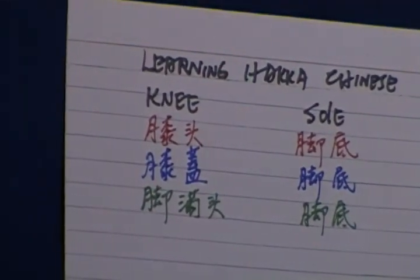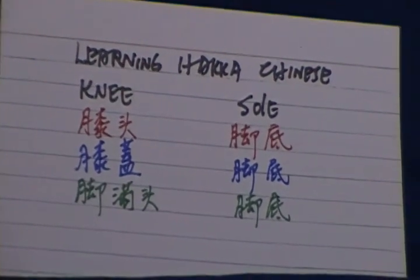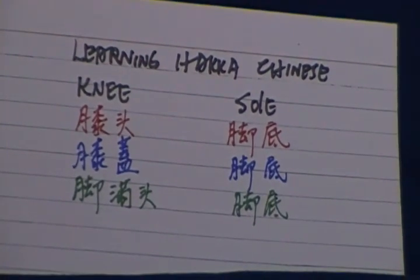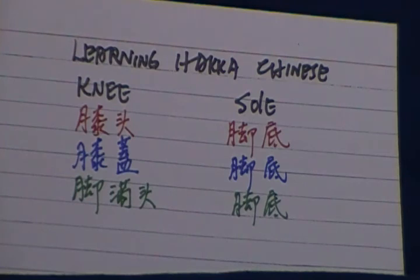Knee. Knee in Hakka Chinese is Tecto. In Mandarin is Xigai. And in Shanghainese dialect is Jiam Yui Du. Tecto in Hakka Chinese, Xigai in Mandarin, Jiam Yui Du in Shanghainese dialect.